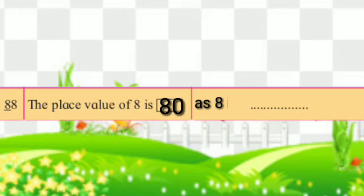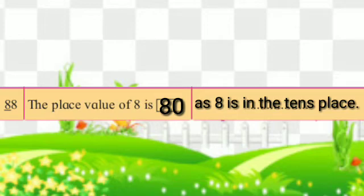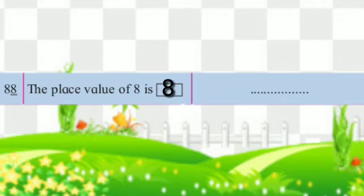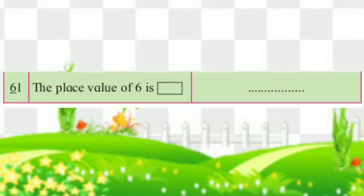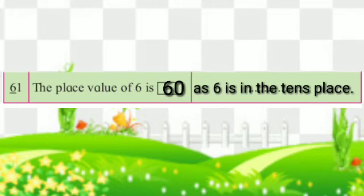In 80, the digit 8 is underlined. The place value of 8 is 80, as 8 is in the tens place. In 88, the underlined digit 8 has a place value of 8, as it is in the units place. In 61, the digit 6 is underlined. The place value of 6 is 60, as 6 is in the tens place.